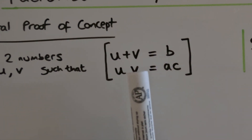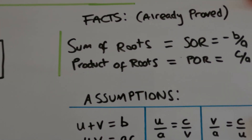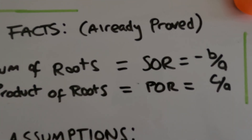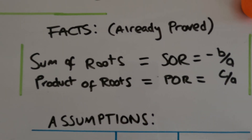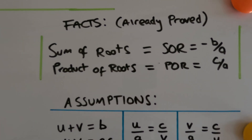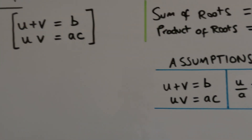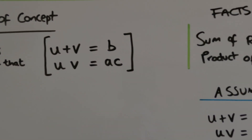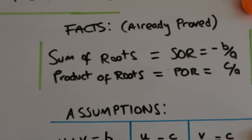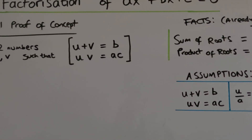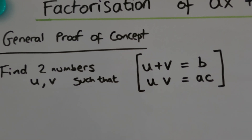Somewhere in the proof we're going to have to use these assumptions. What will eventually happen is it'll boil down to the fact that the sum of the roots is minus b over a and the product of the roots is c over a. So while we're going through all of this with these assumptions, if we can show that the sum of the roots is minus b over a and the product is c over a in the general setting, then we're done — and that proves that the factorization method works.